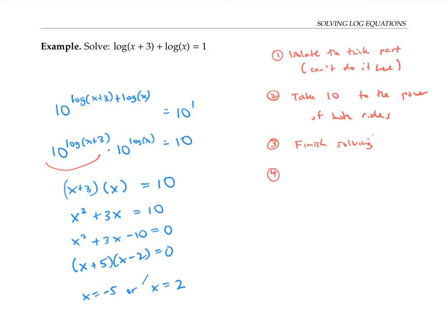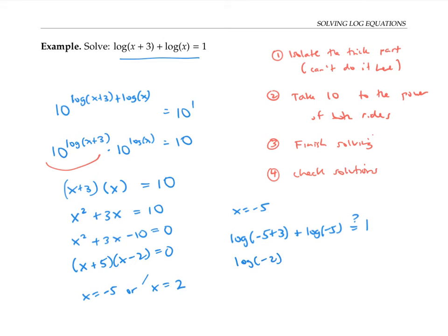Finally, we need to check our solutions to make sure we haven't gotten some extraneous ones. So let's see if x equals negative five: if I plug that into my original equation, I'm checking that log of negative five plus three plus log of negative five equals one. Well, that's giving me a queasy feeling — because log of negative two does not exist. You can't take the log of a negative number, and the same thing with log of negative five. So x equals negative five is an extraneous solution — it doesn't actually solve our original equation.